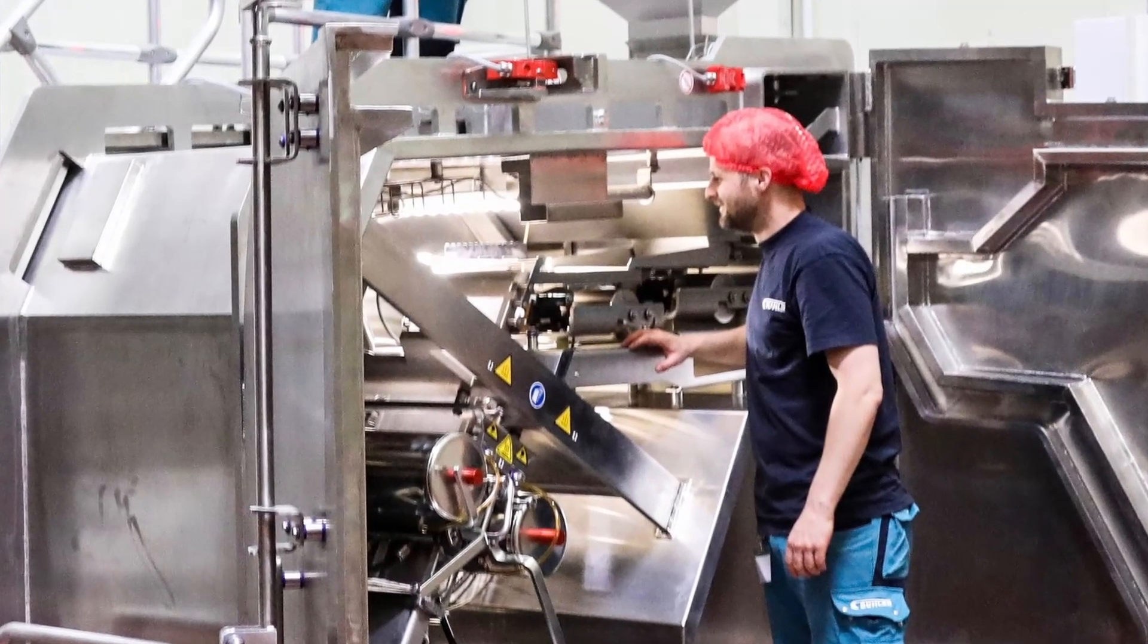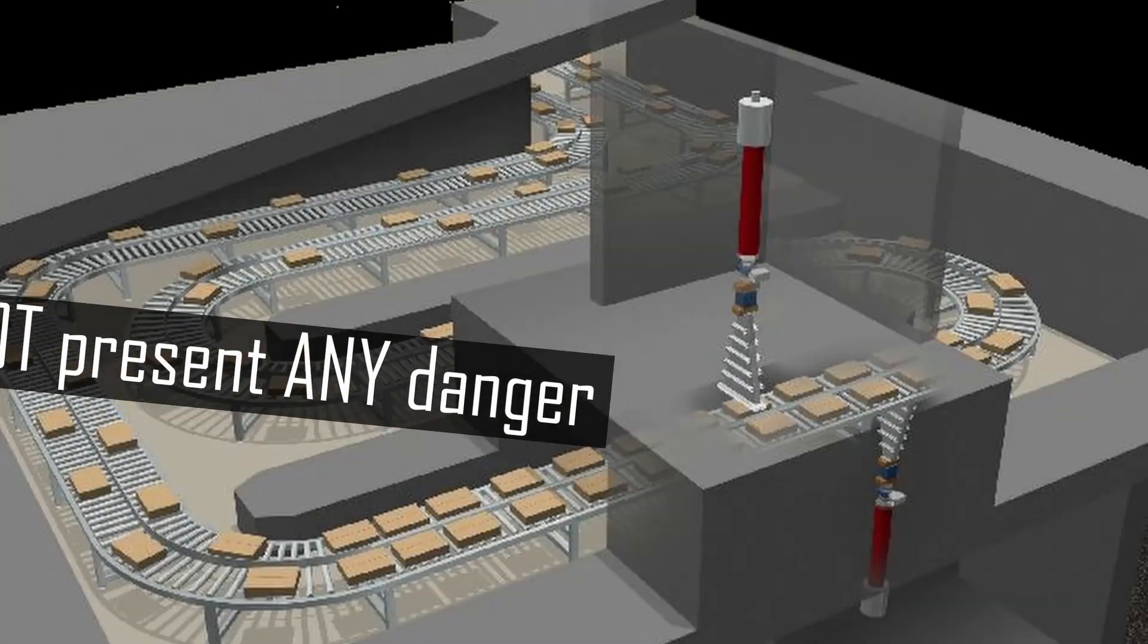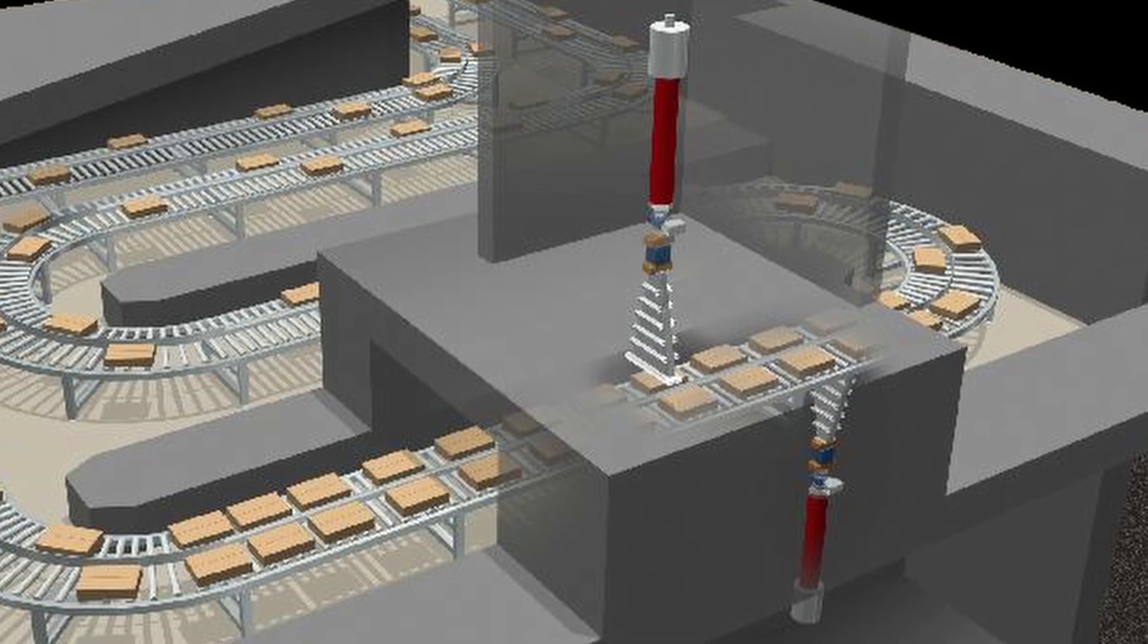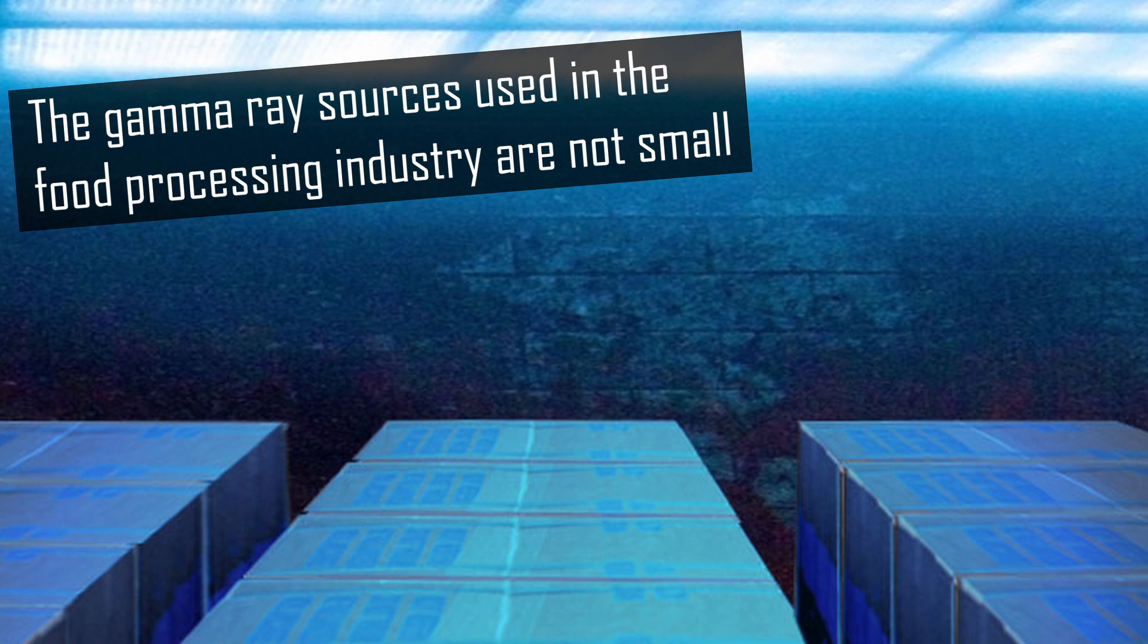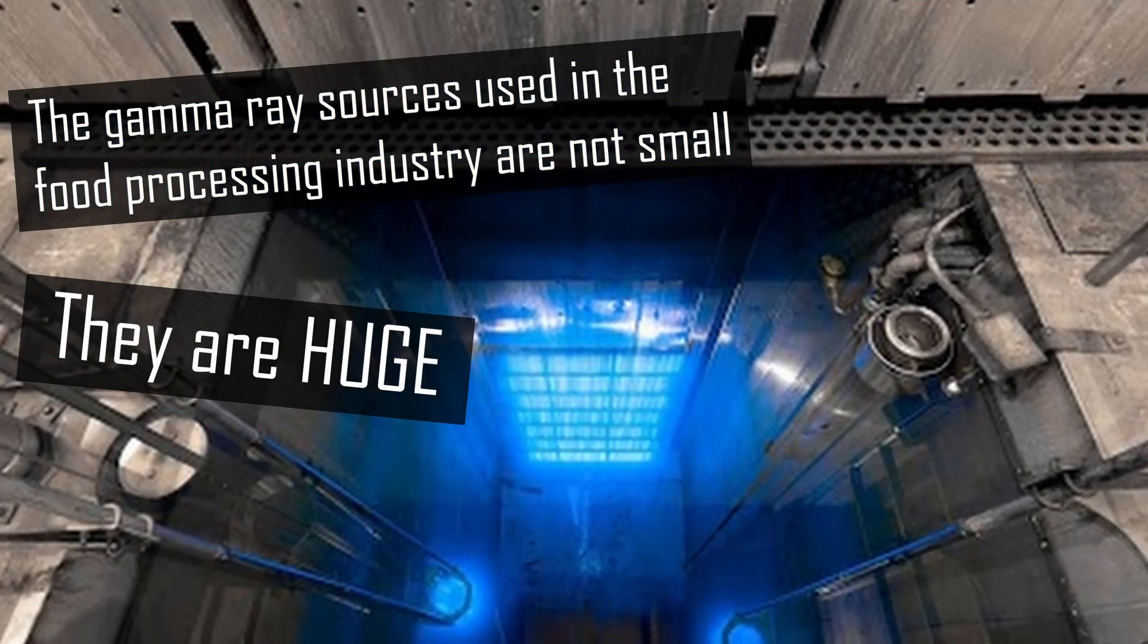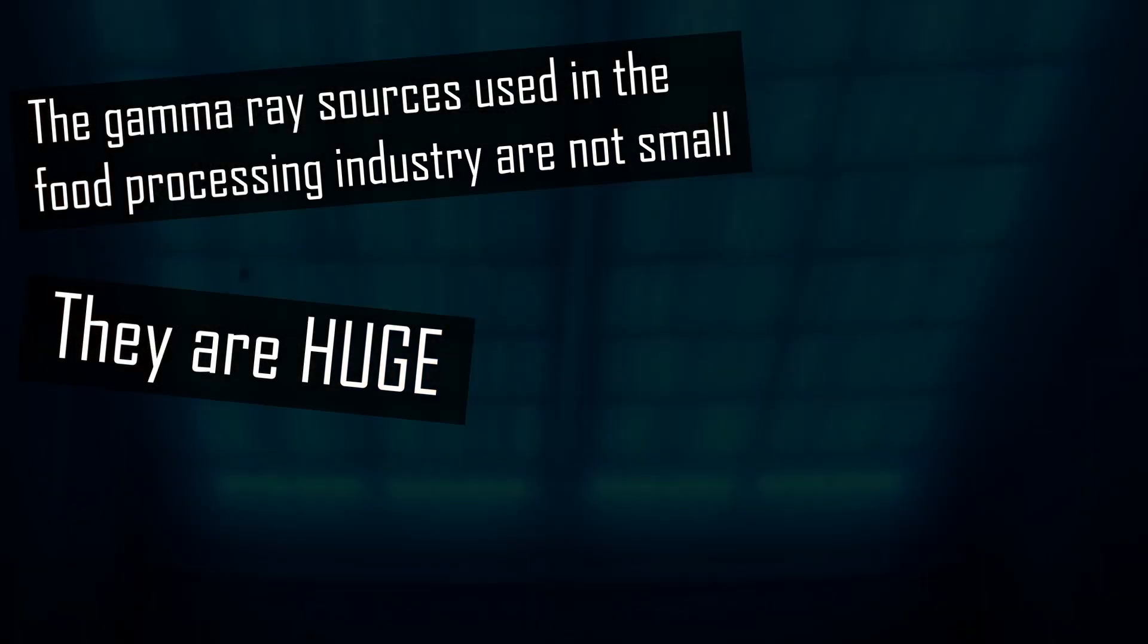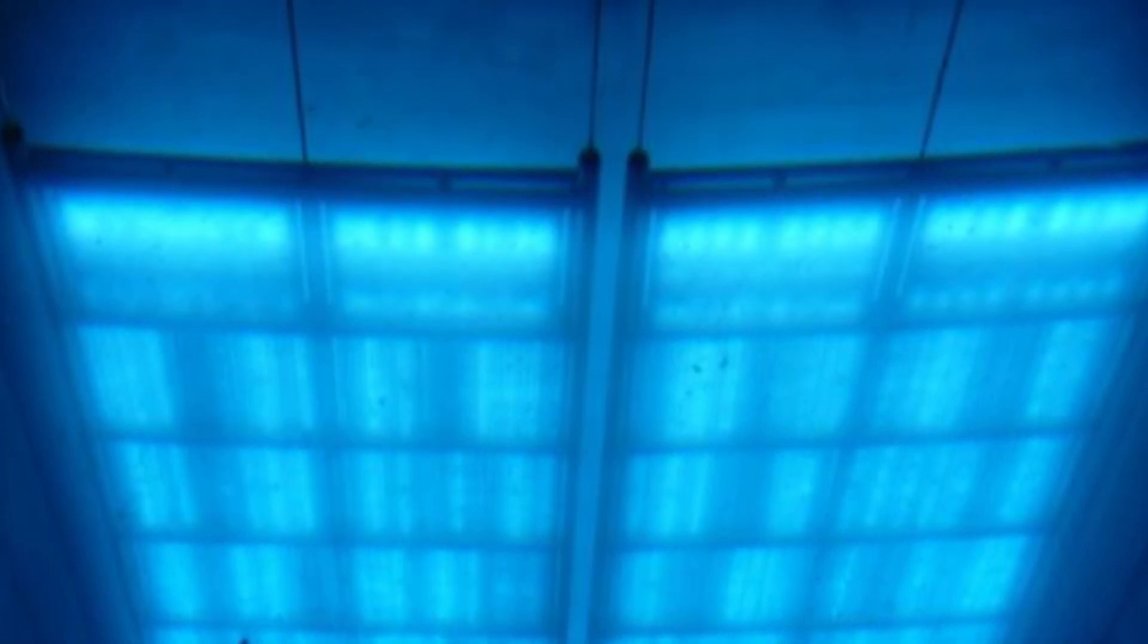I mentioned the food processing industry not because it poses a danger to our foodstuffs, but because these are usually the largest, the most intense and the most commonly found radioactive isotope sources on the planet. Typically, these gamma-ray sources need to be stored in ponds of water when not in use, not unlike spent fuel from a nuclear power station.